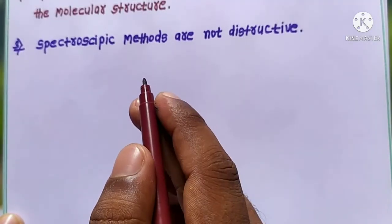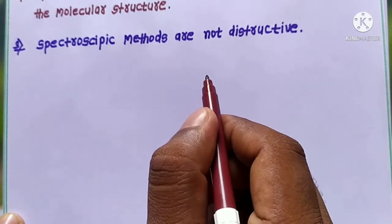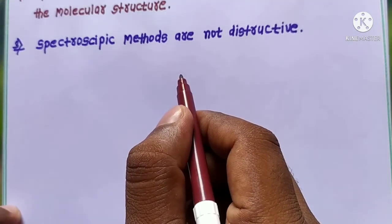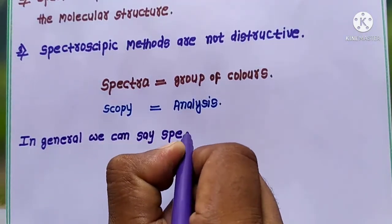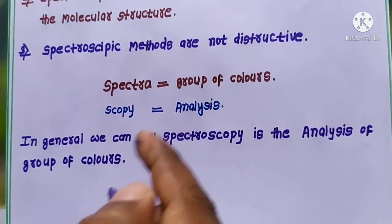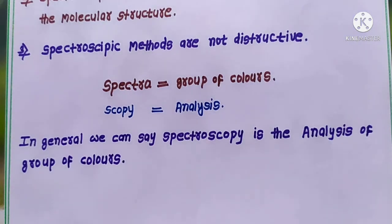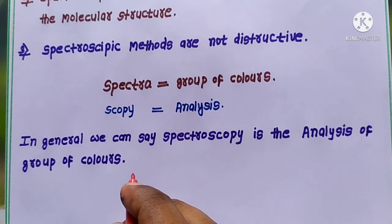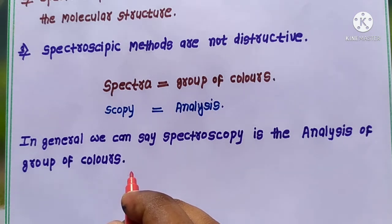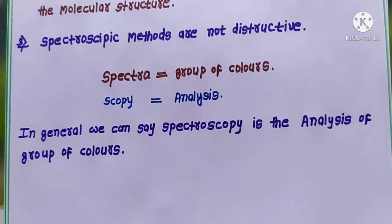The word spectroscopy is split into two words: spectra and scopy. Spectra means group of color and scopy means analysis, so spectroscopy is the analysis of group of color. But the actual definition of spectroscopy is the interaction of electromagnetic radiation with matter — when electromagnetic radiation interacts with matter, it brings out information about that molecule.